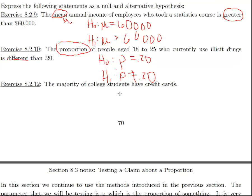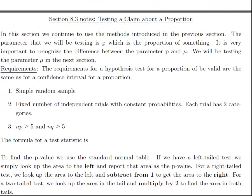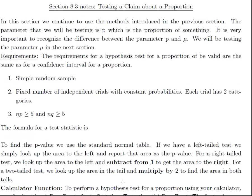Exercise 8.2.12: The majority of college students have credit cards. My null hypothesis is that P is equal to 0.5, because the majority means greater than 0.5. So my alternative would be P is greater than 0.5. That's the end of that section. In the next video, we're going to start section 8.3.